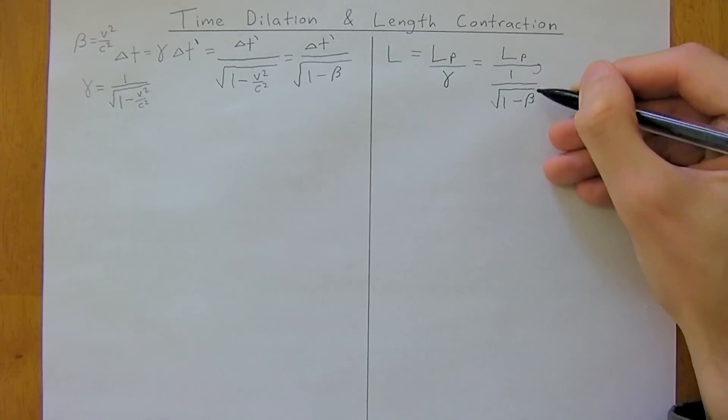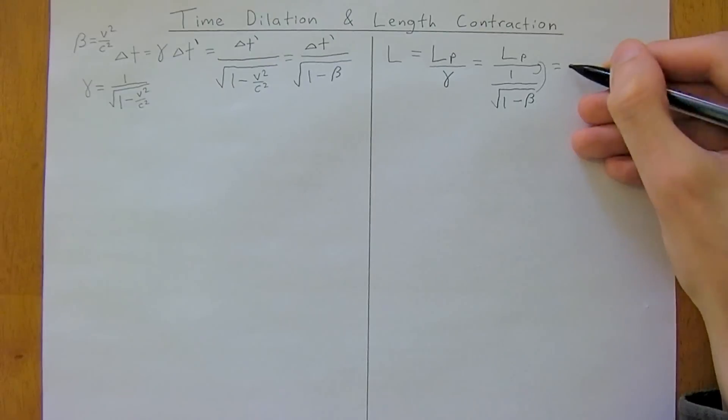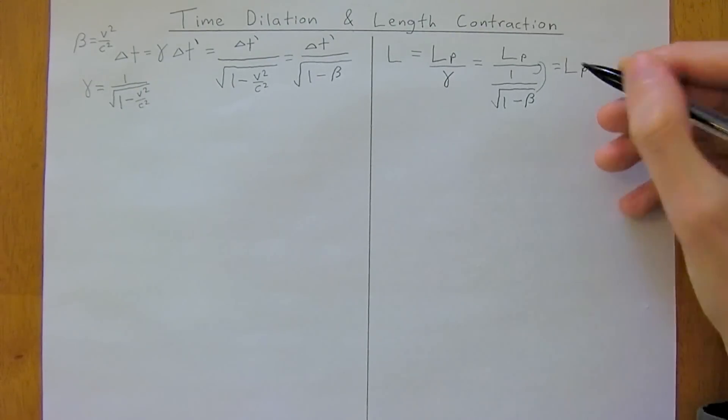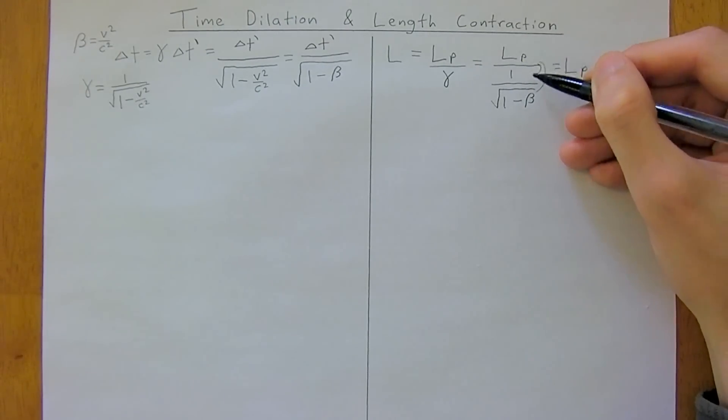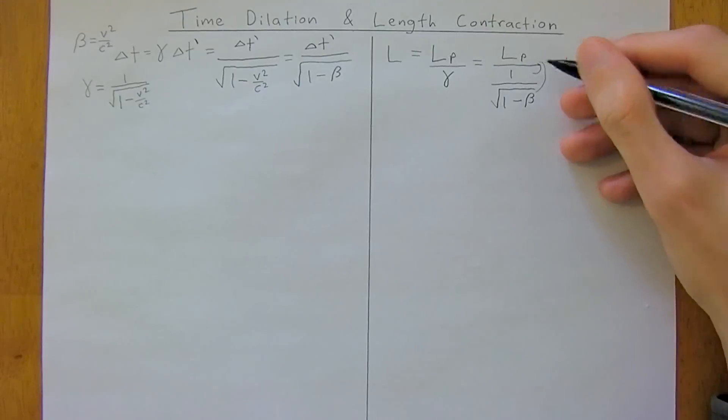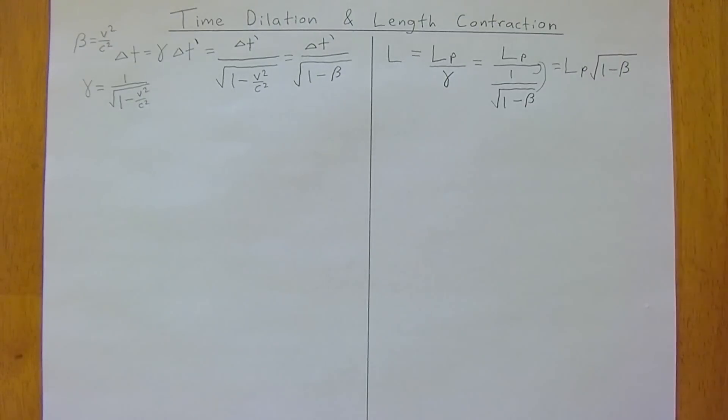Which, of course, is equal to length proper. Remember, think of just working with your fractions here. So this is actually going to come up. Times the square root of 1 minus beta.